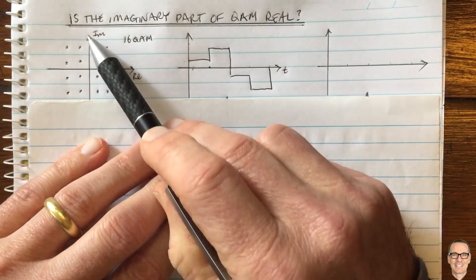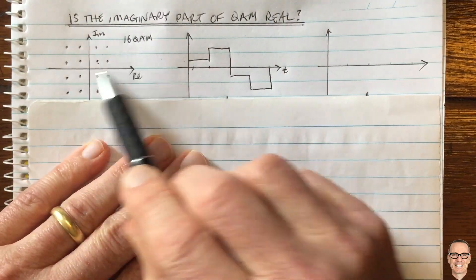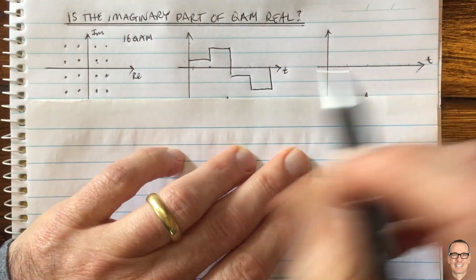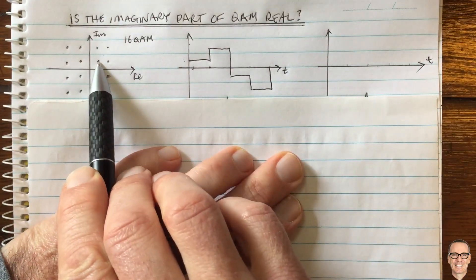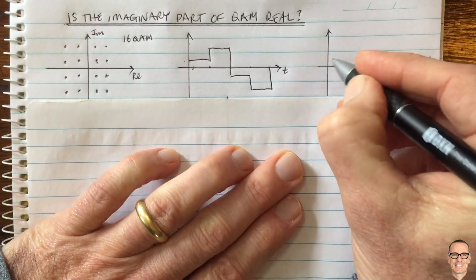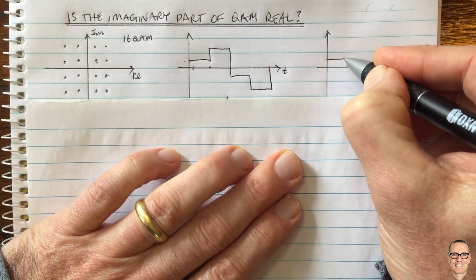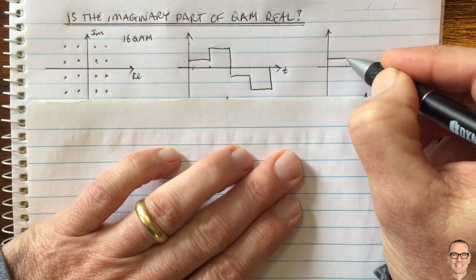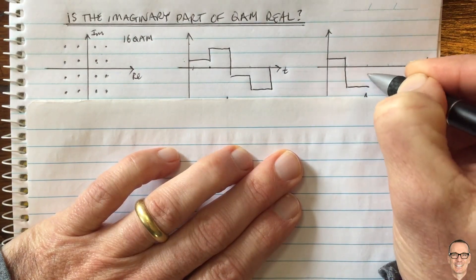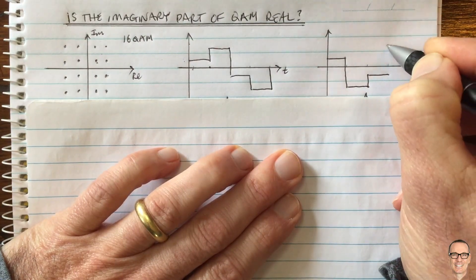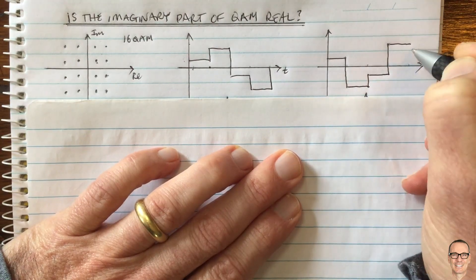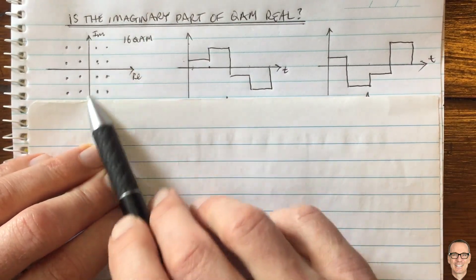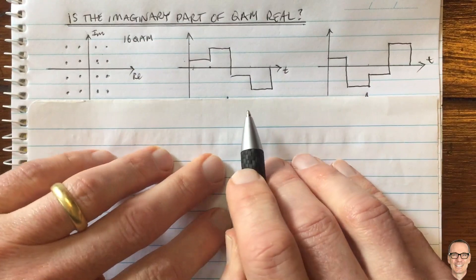This is an example of a time-domain waveform of the imaginary part. We can do the same for the real part — if that point was sent first, it would be positive in the real dimension by this much, and then perhaps a negative maximum value, and so on. The real component represents the cosine and the imaginary component represents the sine.